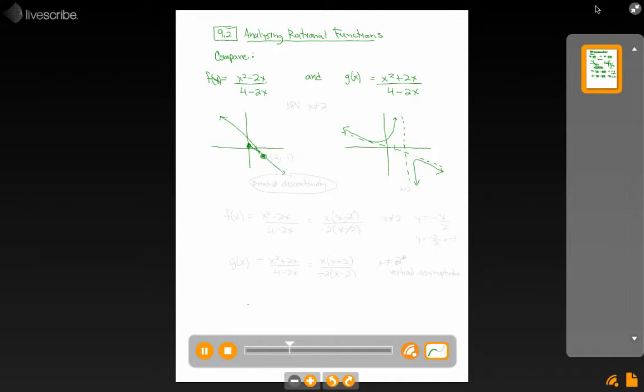Now both of these graphs have a non-permissible value that says x can't equal 2. So at x equals 2, we've got something happening on the first graph, something happening on the second graph, but that something is very different. A vertical asymptote versus a point of discontinuity. How can we tell the difference? And in the last example I described a little bit of this, but let's take a look closer here.